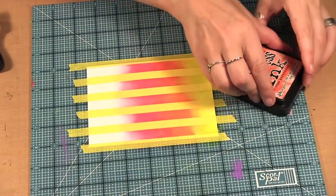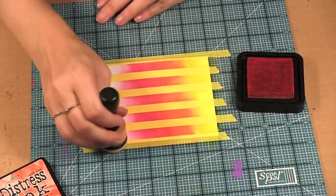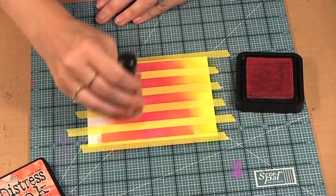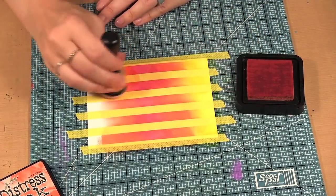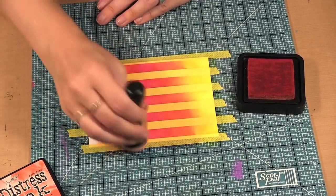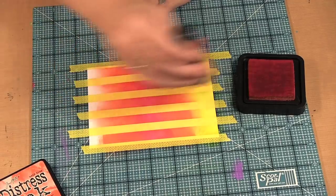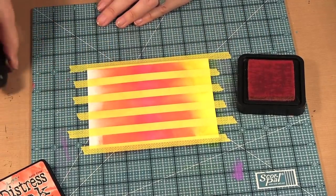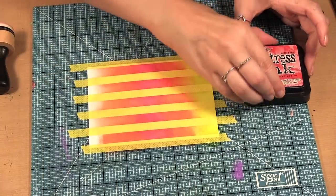And then bright persimmon. Now of course you can choose any colors that you want. If you're doing Halloween cards, purples and greens would be really cool. If you're doing Christmas you could do either reds and greens or blues. This would work with any combination for so many different occasions.